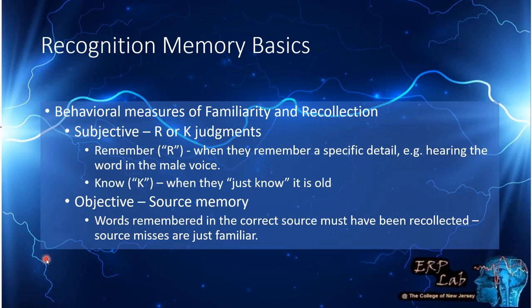Another, more objective way is to have people report directly on the source of information. For example, you could have two lists — one presented in a male voice and one in a female voice — and people report not only whether an item is old but also who said it. If they remember the correct source, at least one piece of information was recollected. If they miss the source information, the assumption is the item was judged old only on the basis of familiarity.